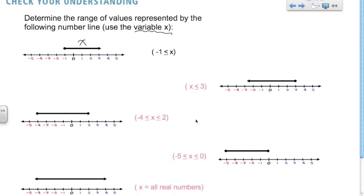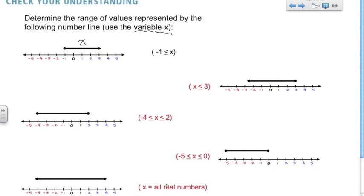Okay, here we go. The only tricky one was the one on the bottom — these are two arrows on either side. So really this is saying that x is equal to all real numbers that exist, there are no limitations. It could really be any number because this goes to the left forever and this arrow goes on to the right forever.